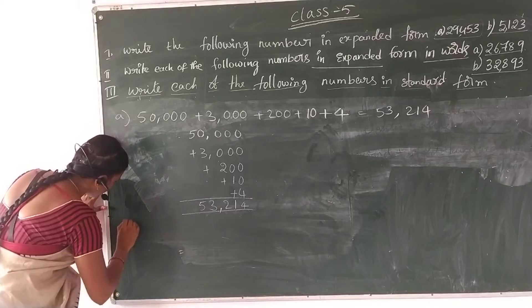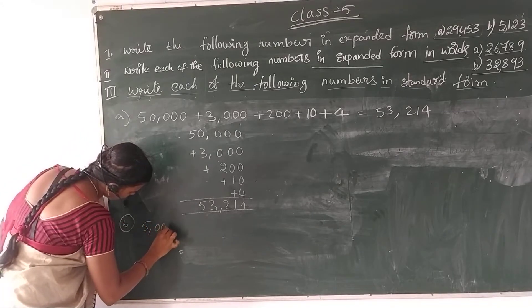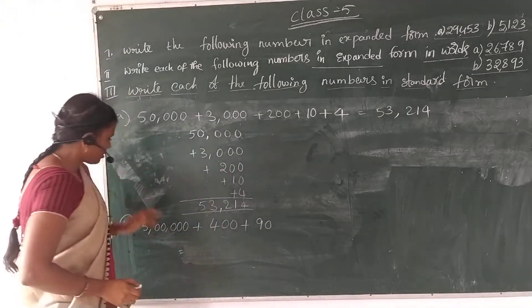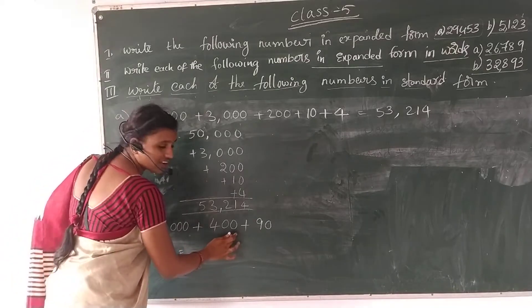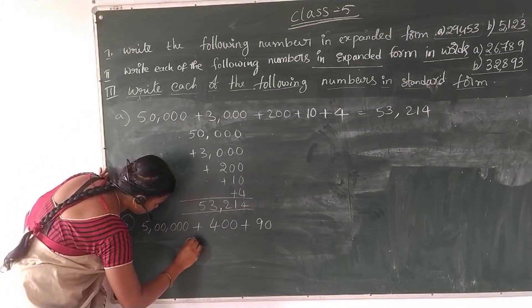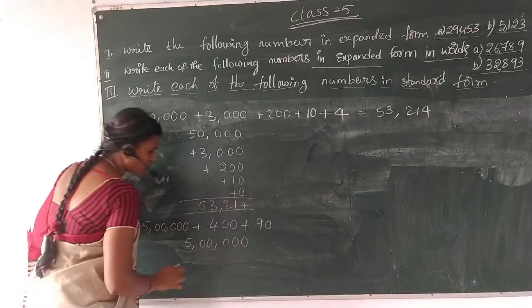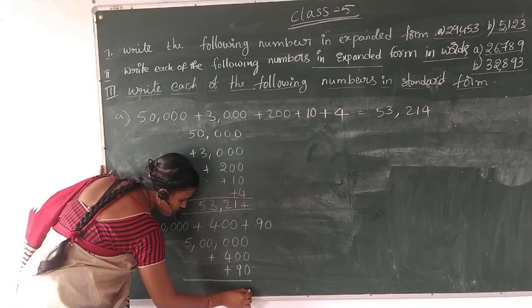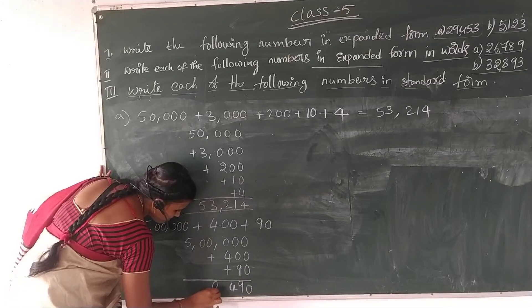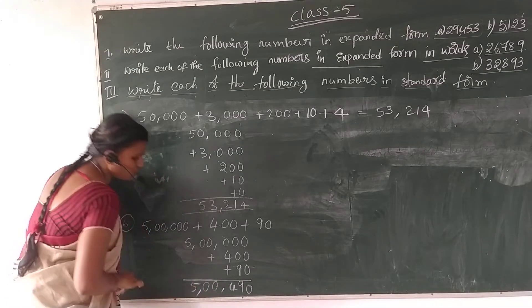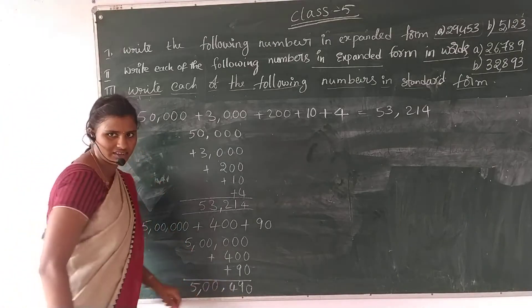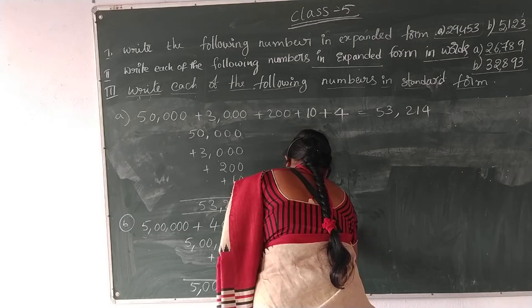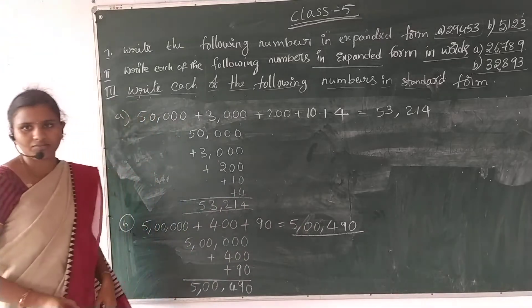One more example: 5,000 plus 4,000 — wait — 5,000 plus 400 plus 90. So the answer is 5,490. Understood?